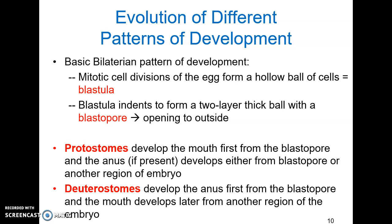We can also look at patterns of development to define animals. The basic bilaterian pattern consists of cell divisions causing the egg to form a hollow ball of cells called the blastula. The blastula indents to form a two-layer thick ball with a blastopore that has an opening to the outside. We can divide bilateral animals into two categories: protostomes, literally meaning 'first mouth,' where the blastopore develops into the mouth and an anus forms from a secondary hole; and deuterostomes, literally meaning 'second mouth,' where the anus develops first from the blastopore and the mouth develops from another secondary opening.